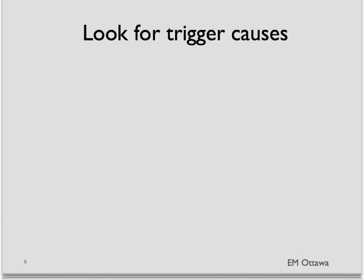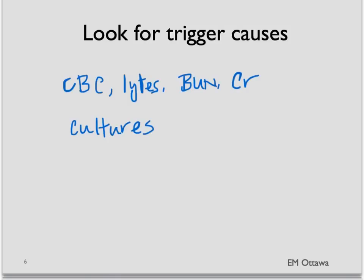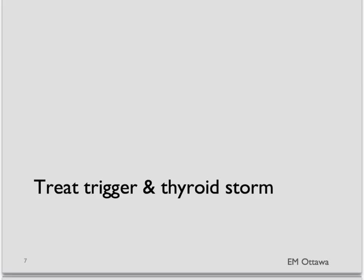Remember how thyroid storm is usually triggered? Besides looking for thyroid storm itself, we may still have to look for the trigger. Therefore, we may need to do labs such as CBC, electrolytes, BUN, creatinine, and cultures — that might help you find the trigger. Remember, these patients often have two diagnoses: the thyroid storm and the trigger itself, and both may need to be addressed at the same time.